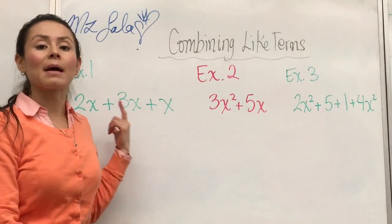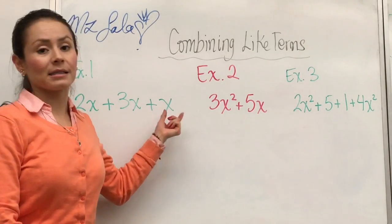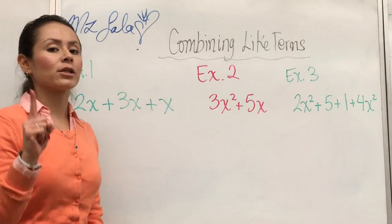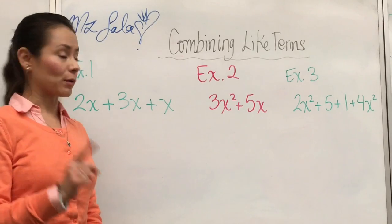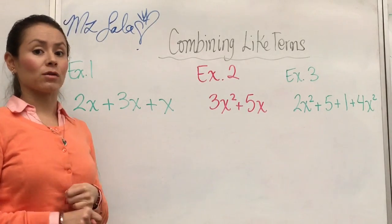Let's look at example number one. We have 2x plus 3x plus x. In this case, you need to look at your variables. First, you need to make sure they are all the exact same variable. So yes, we have nothing but x's, so we can combine those.